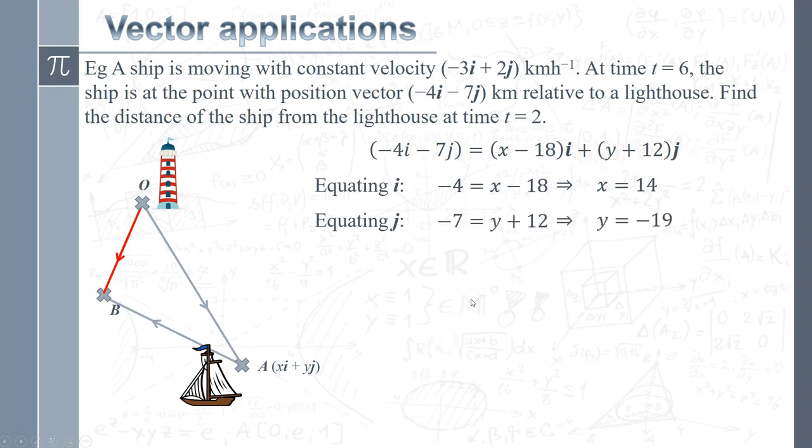So now what we've got is our vector OB. If we just put those values 14 and minus 19 back in, we've got OB. So this basically represents the position of the ship at any point in time. So as the ship moves for any given value of t, any point in time after it starts, its position is being described by this vector here, which is now in terms of t.